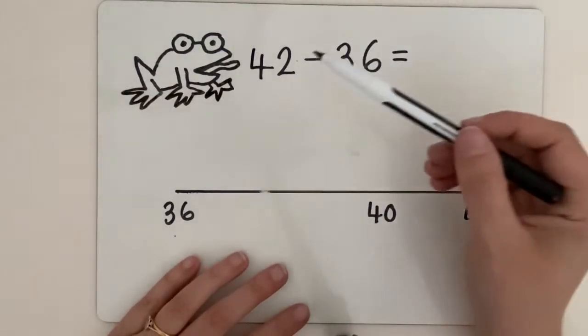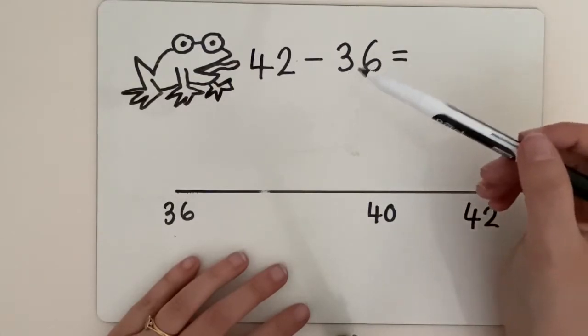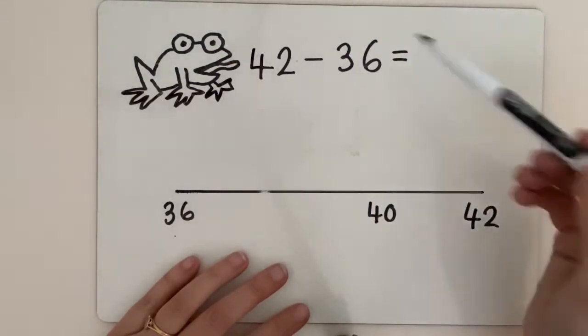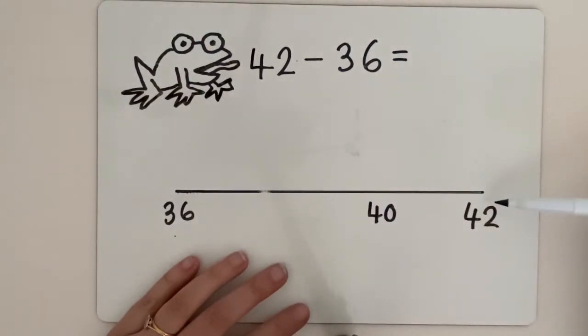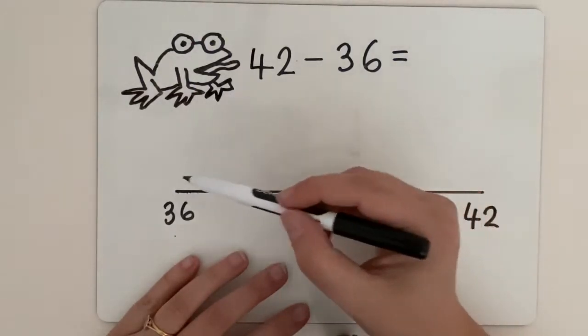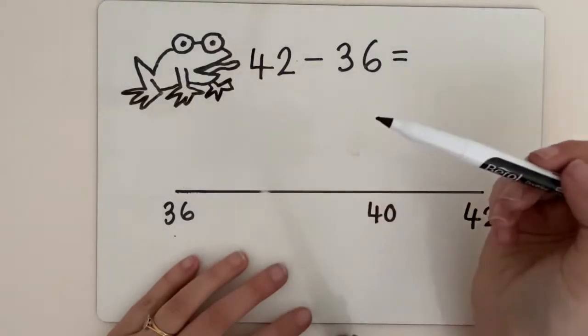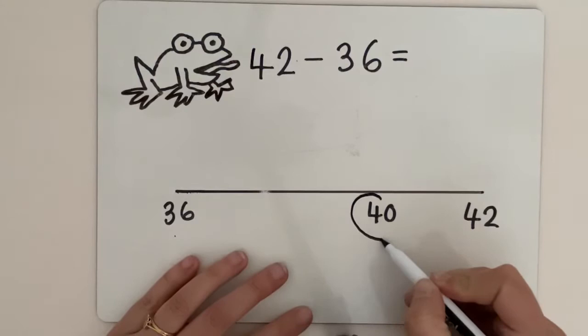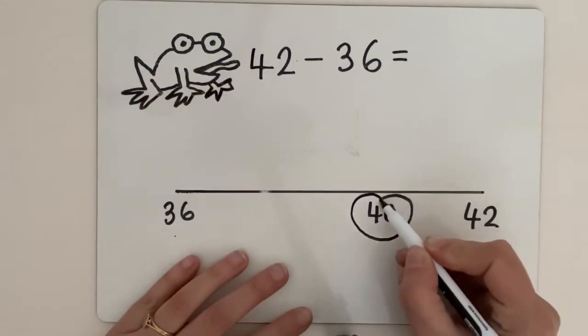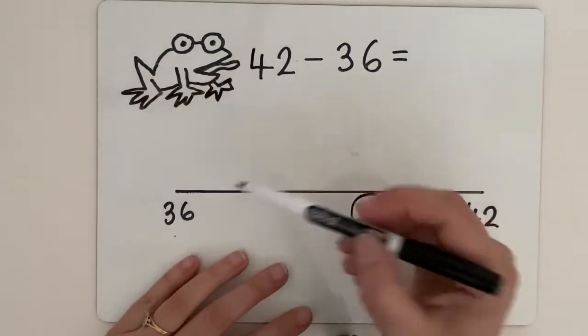So 42 take away 36 is our number sentence. What we need to do is flip it. We're going to start at 36 and count up to get to 42. Our frog is always going to jump to the big fat round tens number. That's like a lily pad. He wants to jump across to there.